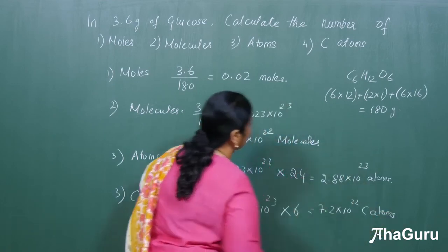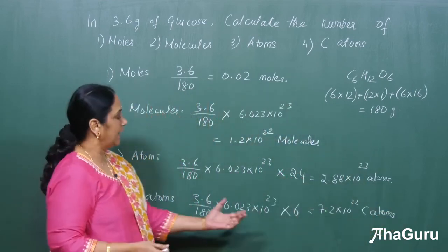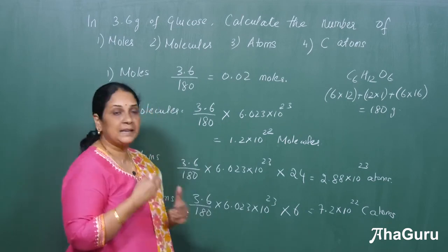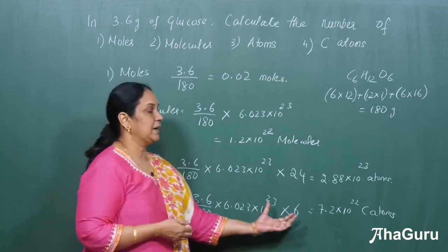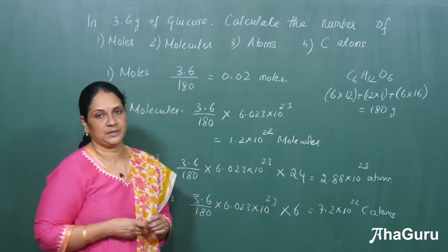In case they ask for oxygen atoms, again multiply by 6. In case they ask for hydrogen atoms, multiply by 12. This is how you have to proceed for different atom types.